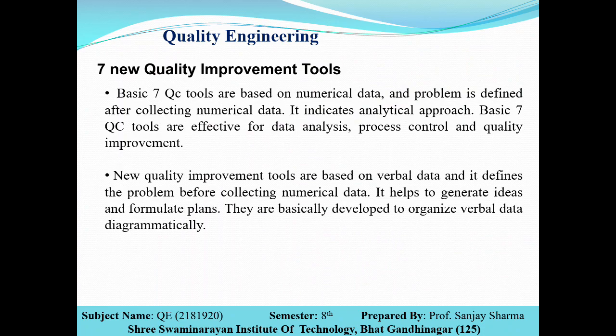The new quality improvement tools are based on verbal data and define the problem before collecting numerical data. Whatever problem is occurring, it is defined before collecting numerical data. They help to generate ideas and formulate a plan. The seven new quality improvement tools give verbal information based on analysis, helping generate ideas and formulate plans to avoid problems occurring during the process. They are developed to organize verbal data diagrammatically.